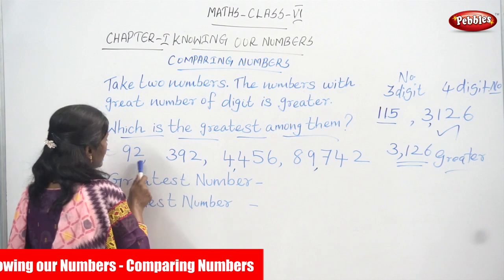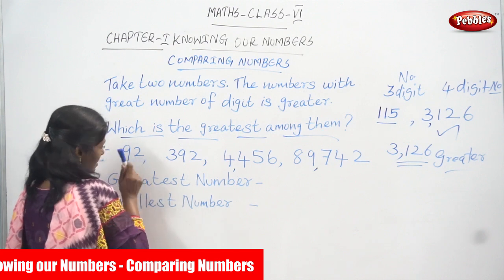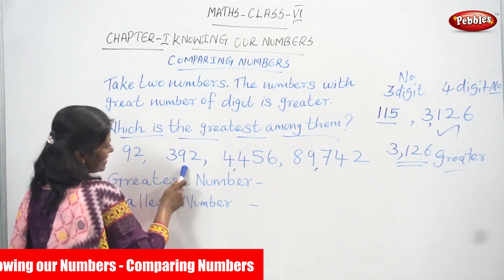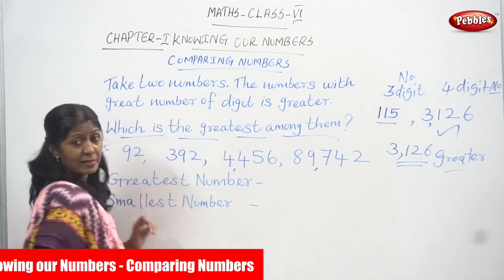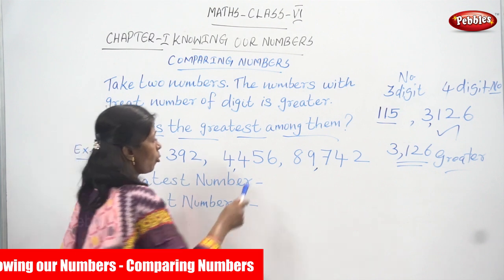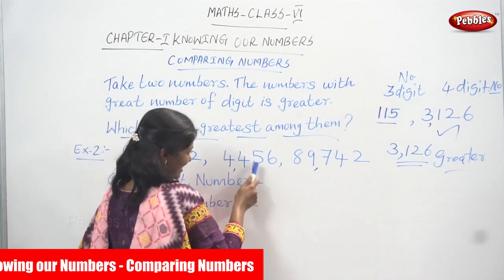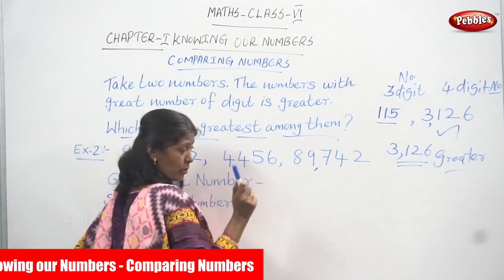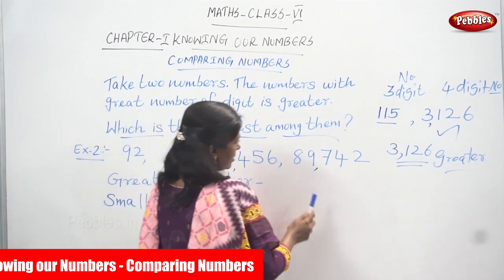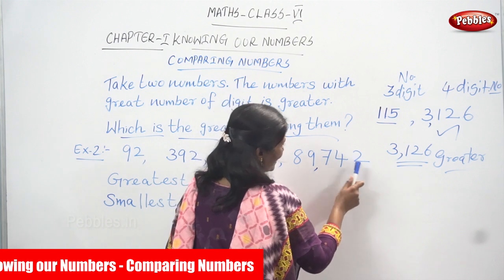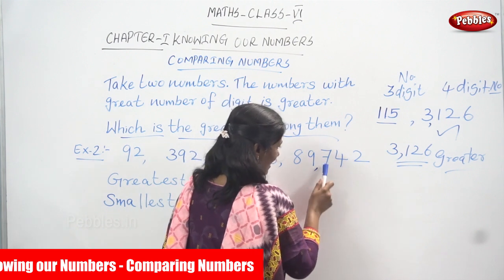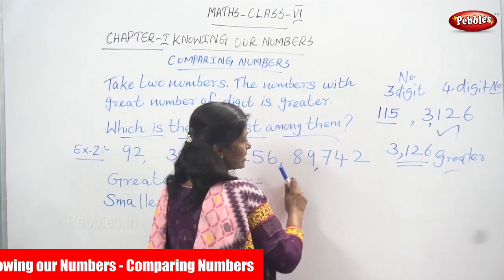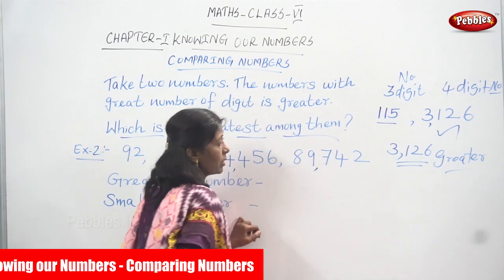Let me count: ones, tens — two digits. Ones, tens, hundreds — three digits. Ones, tens, hundreds, thousands — four digits. And here: ones, tens, hundreds, thousands, ten thousands — this is a five-digit number.